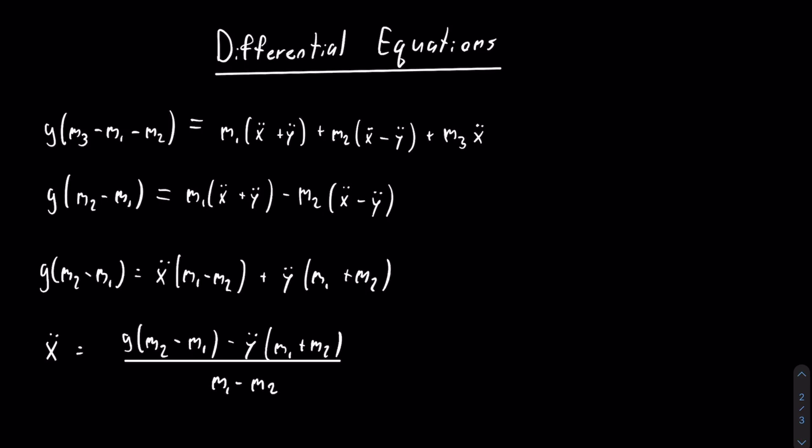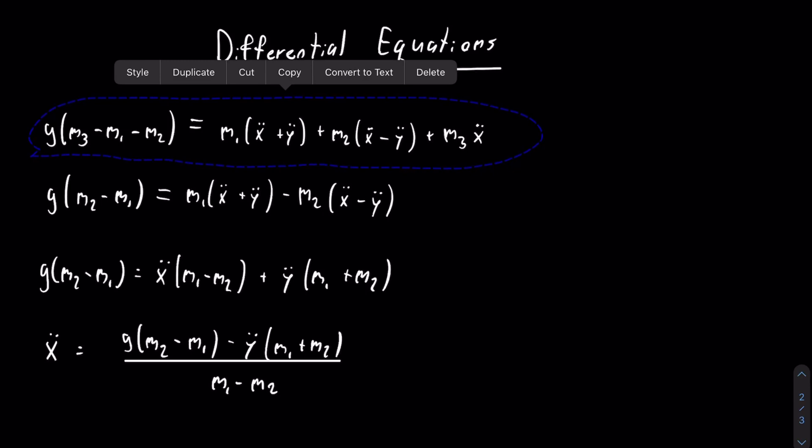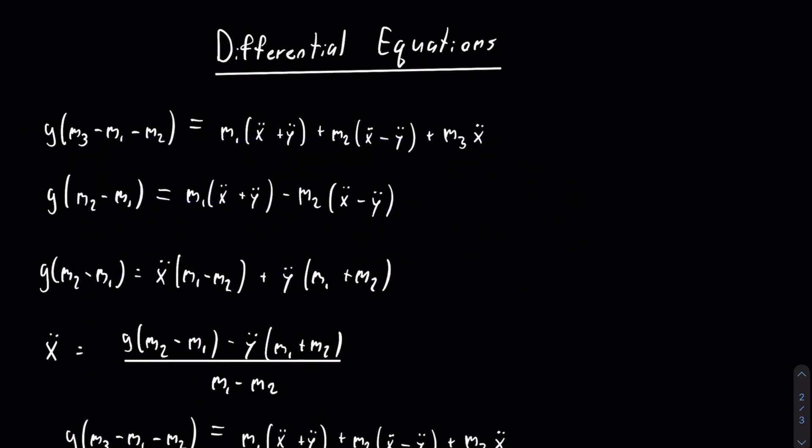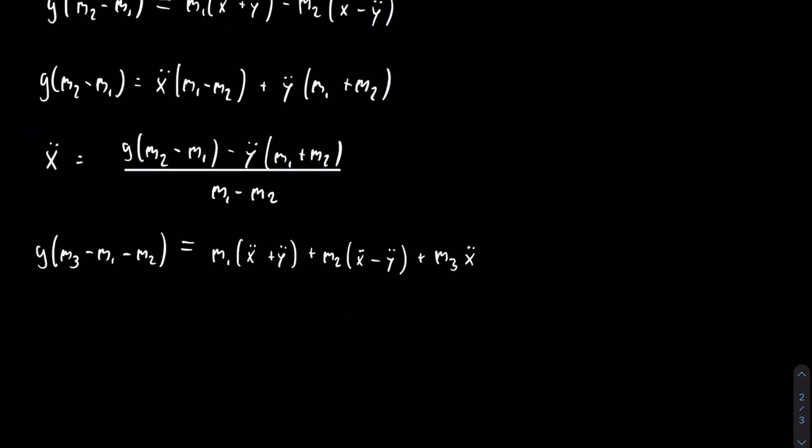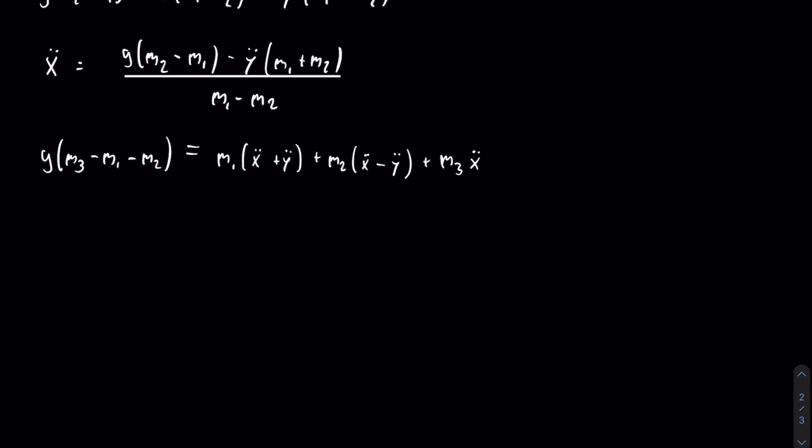So now that we have x double dot in terms of y double dot, we can copy the first equation. I'm just going to put that a little bit lower. And then we can start using that in this equation. So right now, x double dot is pretty lengthy and messy. So what we're going to do with this equation is the same thing we did with the previous one. We're going to factor out an x double dot for the terms where it could be factored and a y double dot for the terms that it could be factored as well.